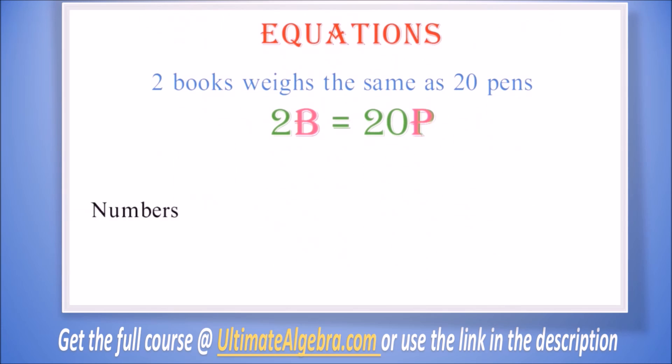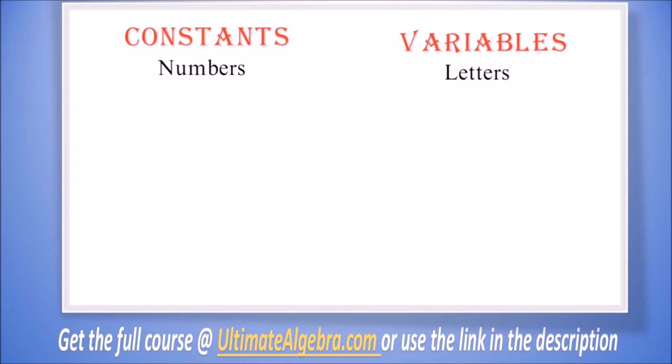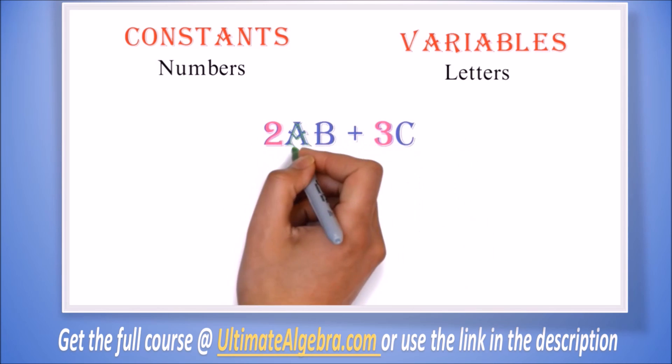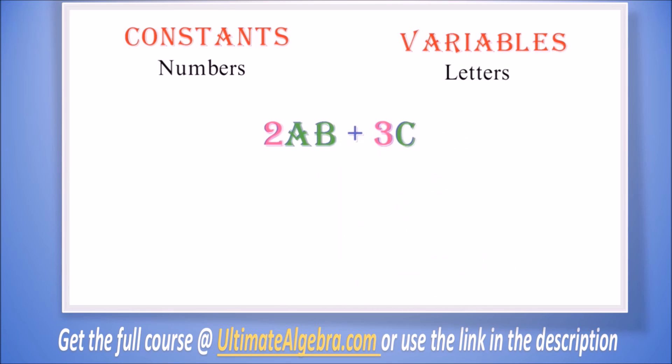In algebra, we refer to the numbers as constants and the letters as variables. This statement is not always true, but we won't go into it in this lesson. So for 2ab plus 3c, the 2 and 3 are constants and the a, b, and c are variables.